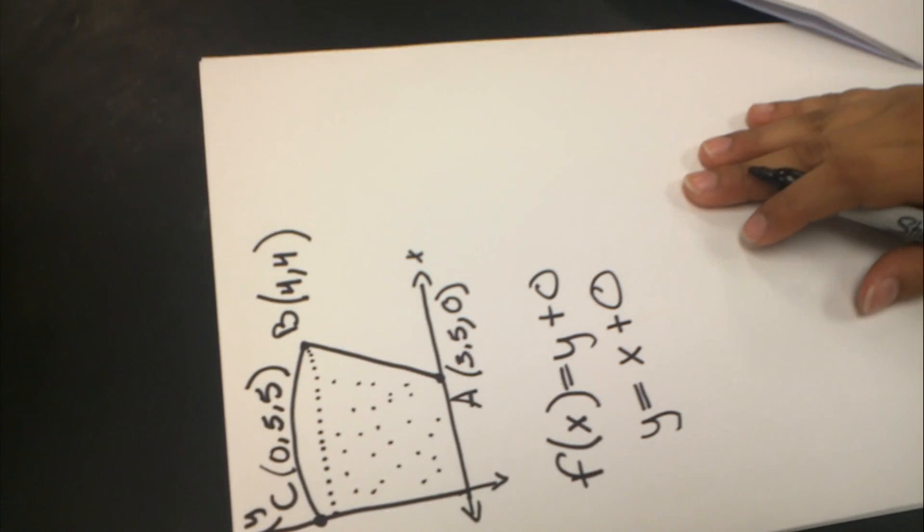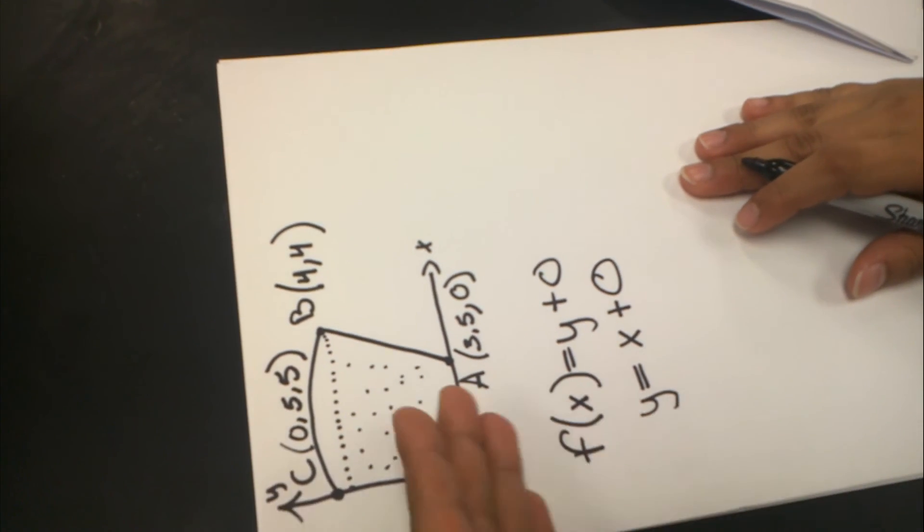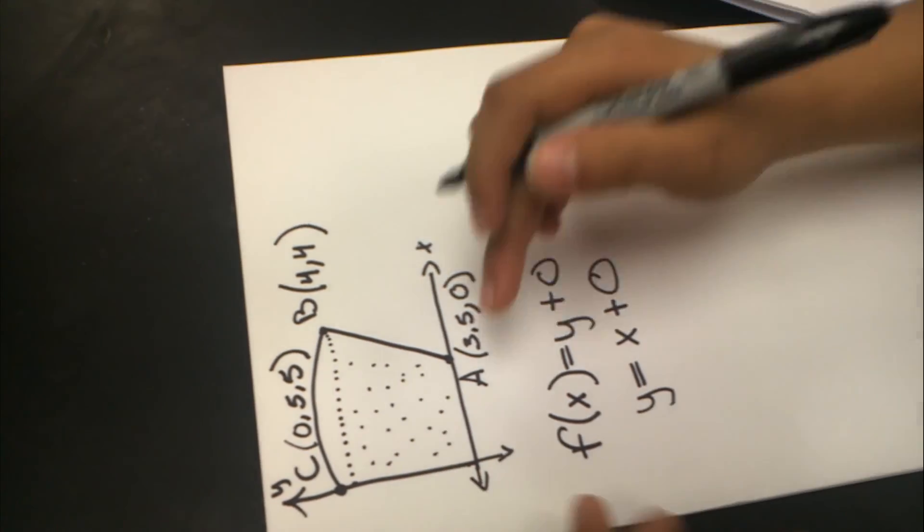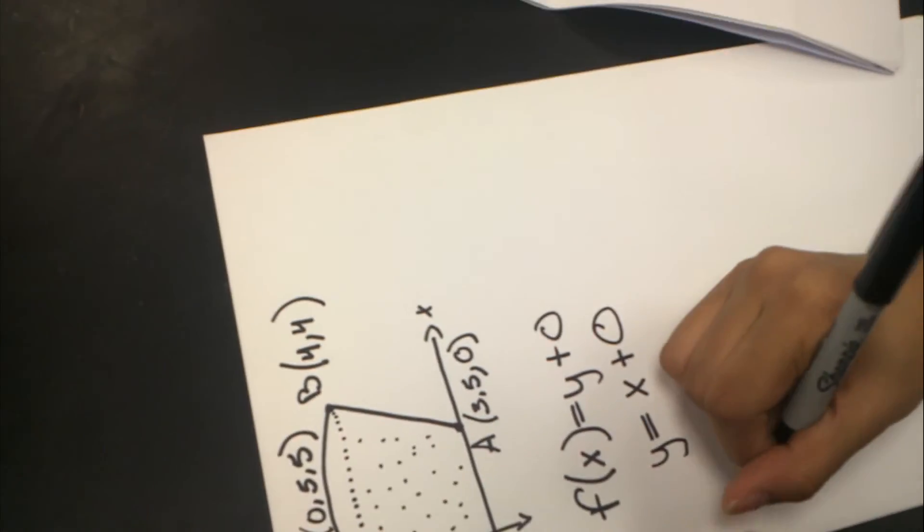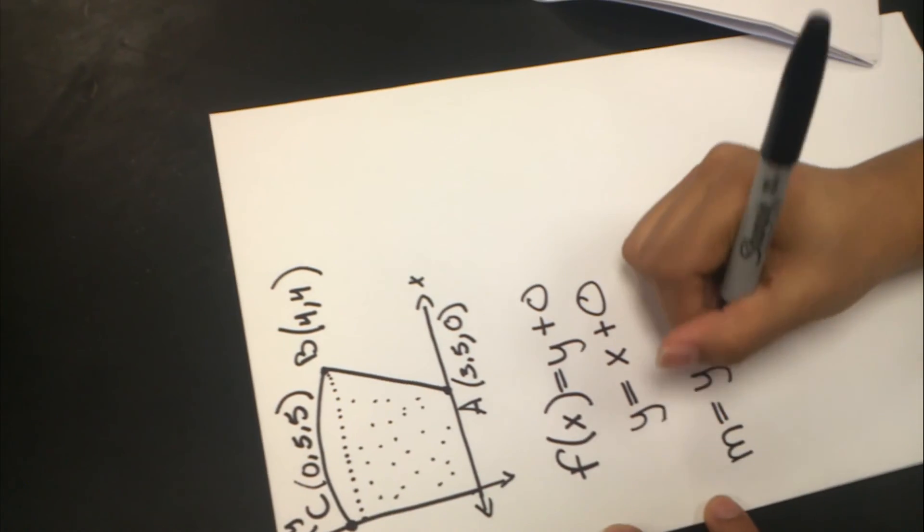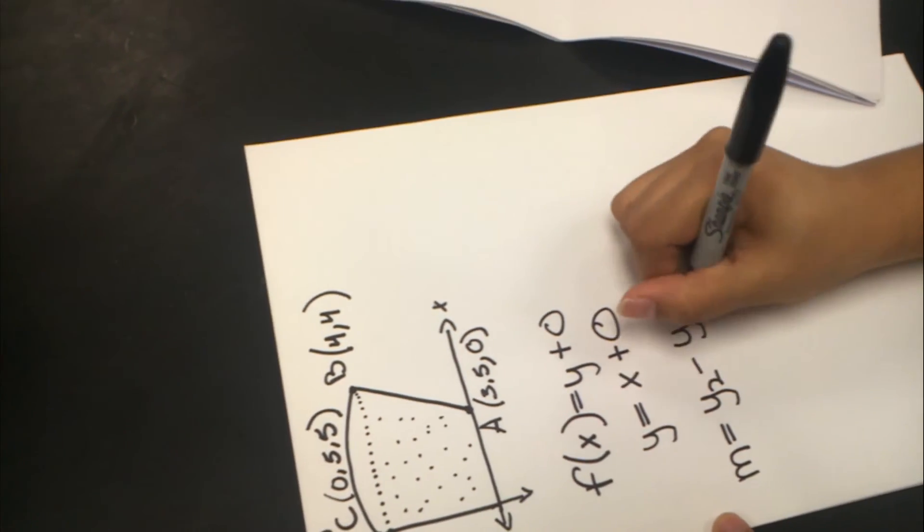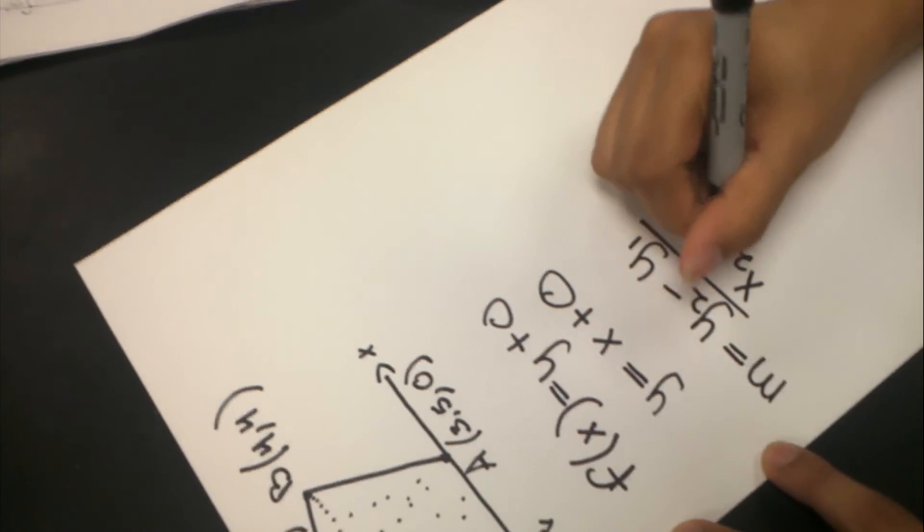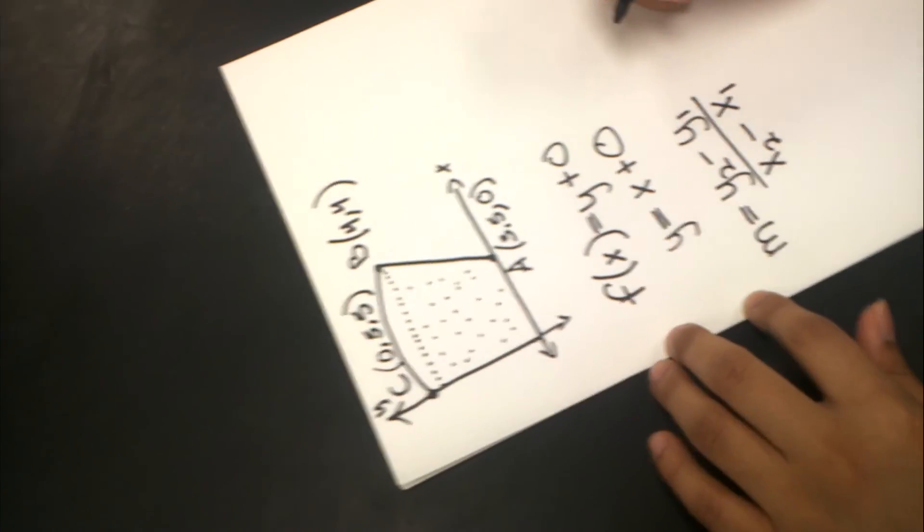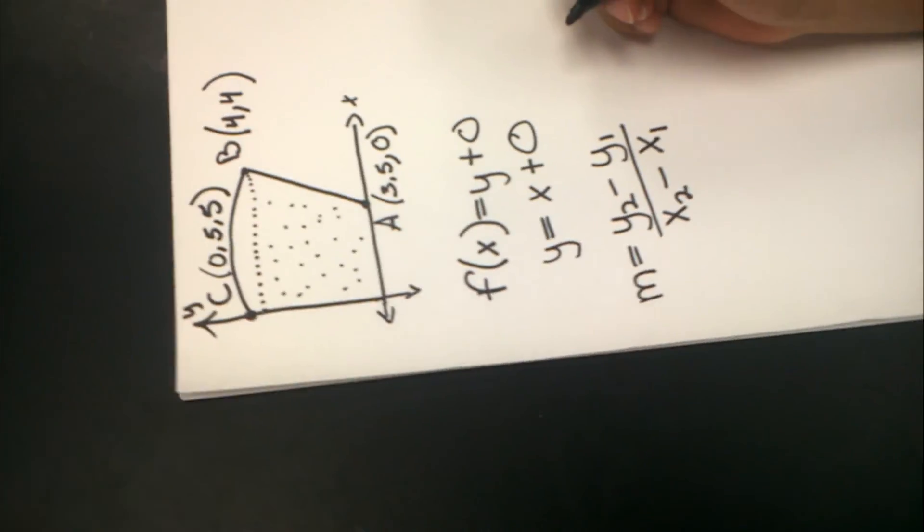First, you need to find the slope of this line segment, of course, line AB. And we need, the formula is M = (Y2 - Y1)/(X2 - X1) to find the slope. This is to find the slope of the line segment.